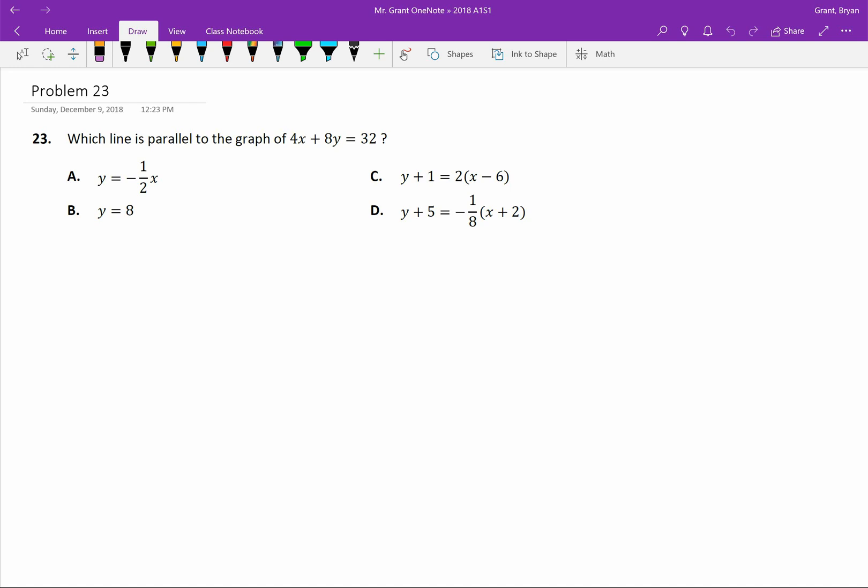Welcome back to your Algebra 1 semester 1 final exam review. We're looking at problem 23, which for this year is dealing with parallel lines.